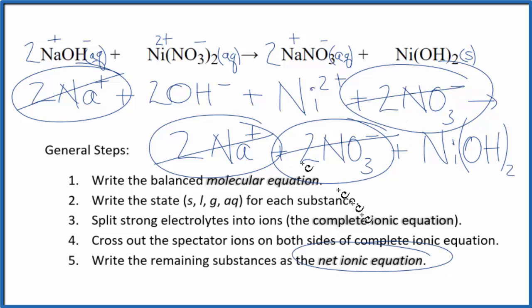What's left is our net ionic equation for NaOH plus Ni(NO3)2. I'll clean this up and write the states in, and we'll have our net ionic equation.